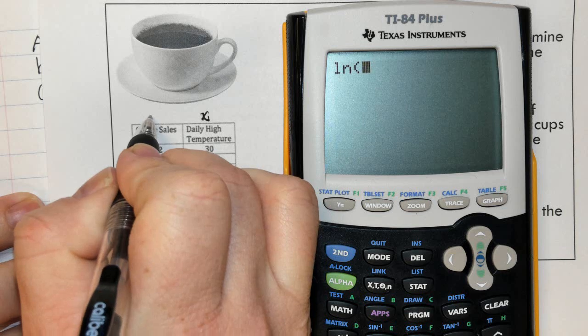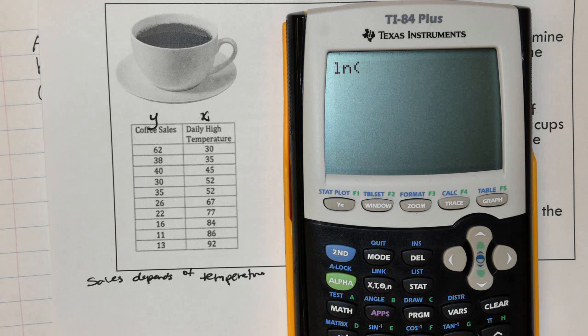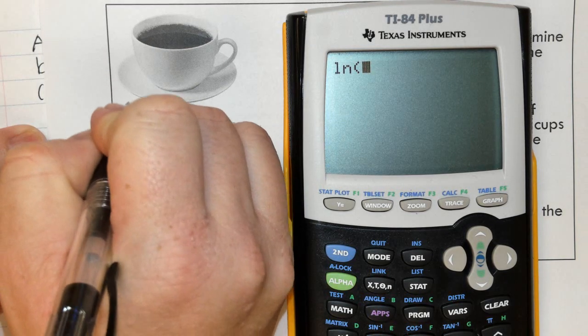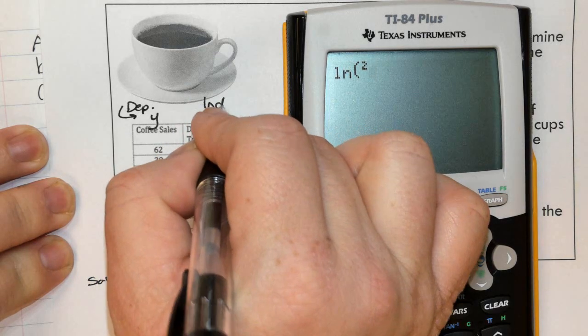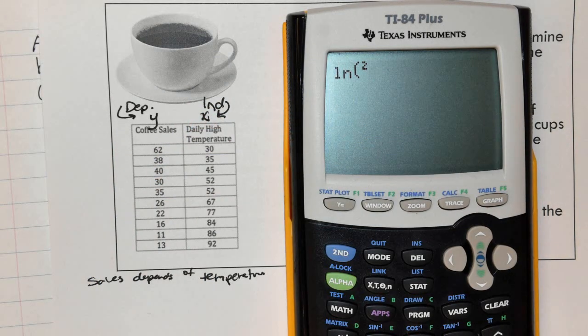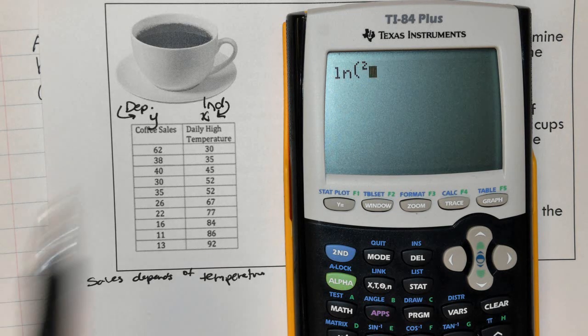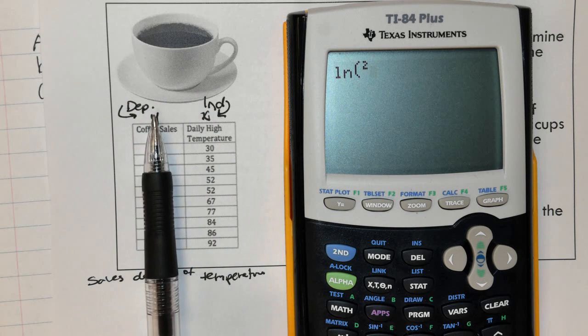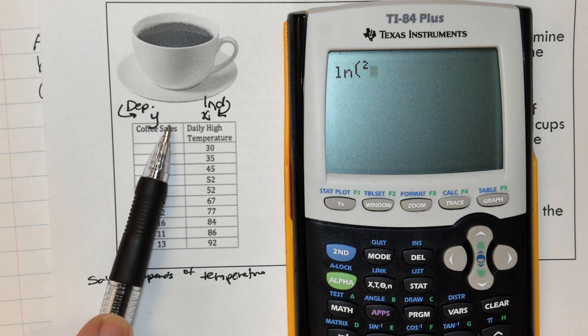Above temperature, write an X. Above coffee sales, place a Y. Your dependent is always the Y and the independent is always the X. So if it does not specify for you first, you have to decide which concept is dependent upon the other. In this case, sales depends on temperature. Whatever is dependent is your Y. Whatever is independent is your X.